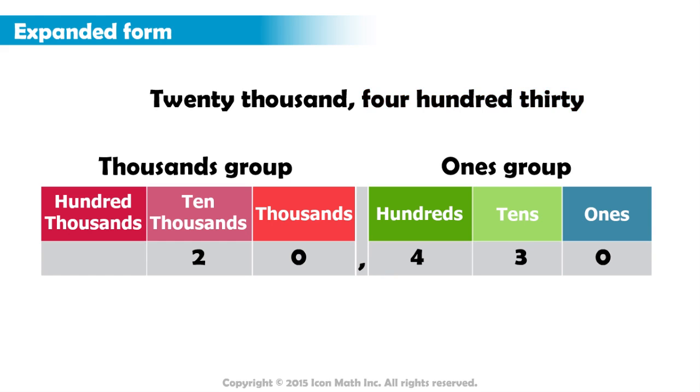Writing it in expanded form is a way to show how much each digit in the number represents the digit's value. Since we have the number in a place value chart, we can see how much each digit represents. Here, we ignore the zero digits, because they represent a value of zero.